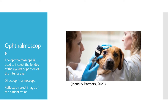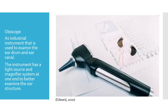An otoscope is an instrument that is used to examine the eardrum and the inner ear canal. This instrument has a light source and a magnifying system at one end to better examine the ear structure. This will often be used in general check appointments of an animal. Care should be taken during examination and it is best to warn the owner, as it can be painful, so it's best to be as gentle as possible.